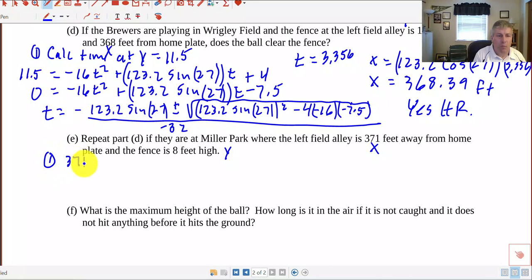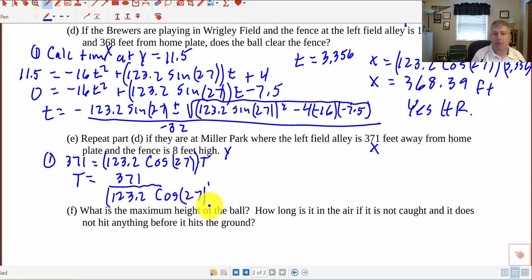We've got part 1, we're going to say 371 equals 123.2 cosine of 27 times T, and now we'll solve for T. Now we'll find that the T at which it's 371 feet away we'll plug that T into the Y and see if it's above 8 feet high. We get T equals 371 all over 123.2 cosine of 27. So be careful with your parentheses and we get T equals 3.3797 so 3.3797 seconds to go the 371 feet.